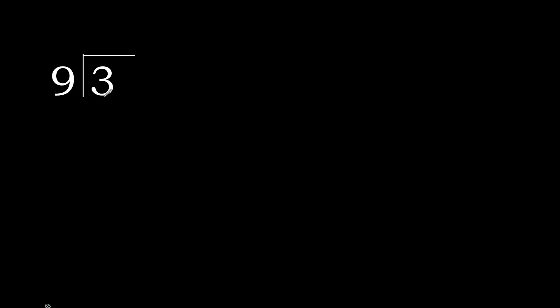3 divided by 9. 3 is less, therefore complete — always complete with 0. Here, place the decimal point.